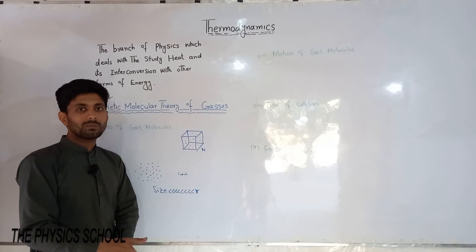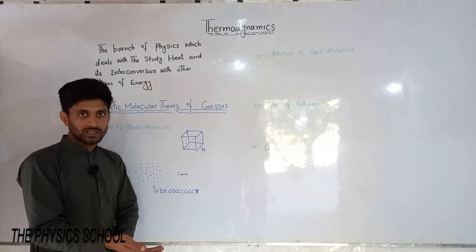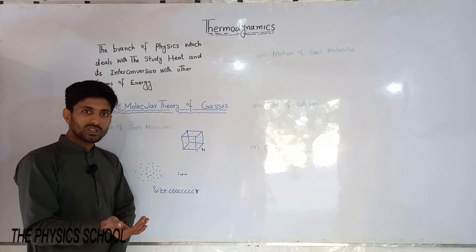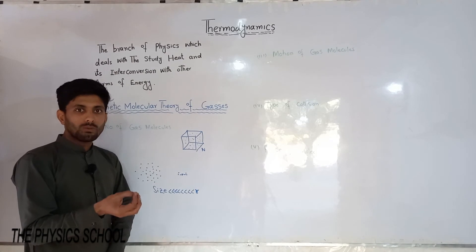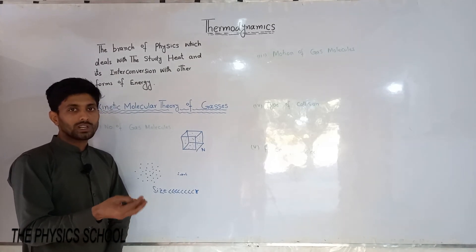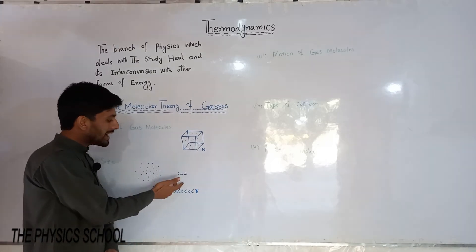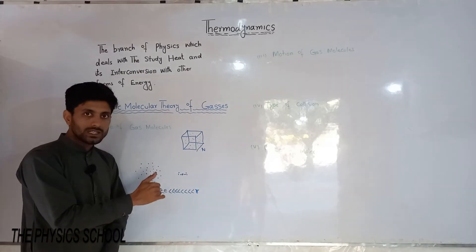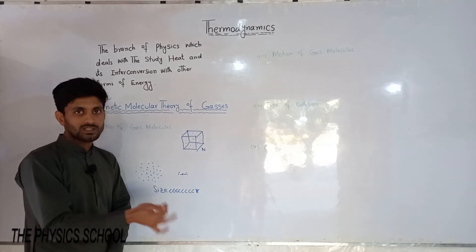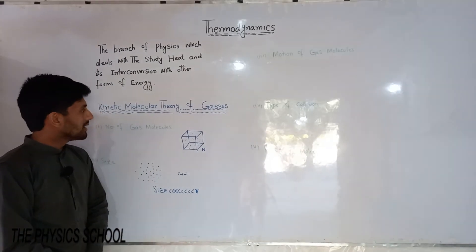Inhe hum point masses ka naam dete hain. Yeh cheez aap log electrostatics mein dekhte hain point charges ke baare mein — agar do charges ke darmiyan separation much greater ho un ke size se, to un charges ko hum deal karte hain as point charges. Similarly, gas molecules are also point masses — zero masses, zero-dimension masses.